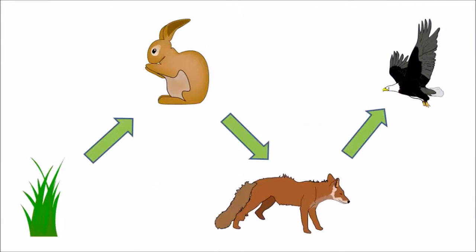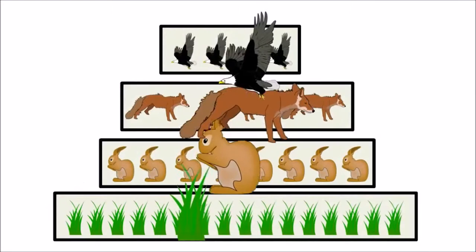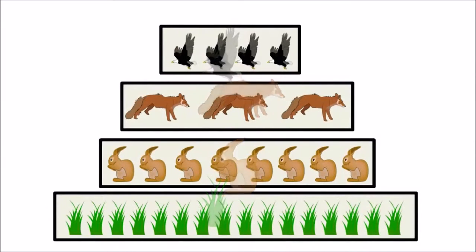A trophic level is a step in a food chain of an ecosystem. The organisms in a food chain are classified into their trophic level depending on their feeding behaviour. The number of steps an organism is from the start of the food chain is a measure of its trophic level.